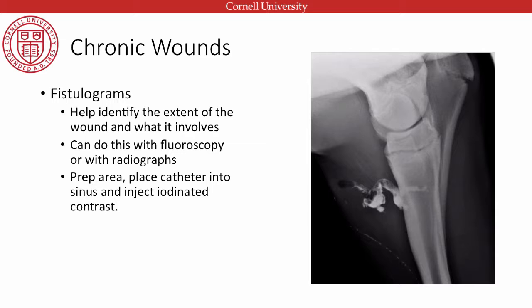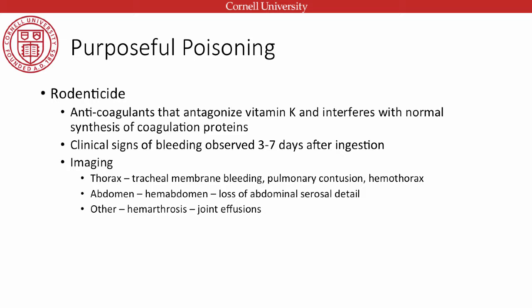To perform a fistulogram, we prep the area, place a catheter into the sinus, and inject iodinated contrast agent with standard radiographic equipment. This is demonstrated in a horse case where contrast was injected and a film taken, giving a similar evaluation of the extent of the wound and its tracking.